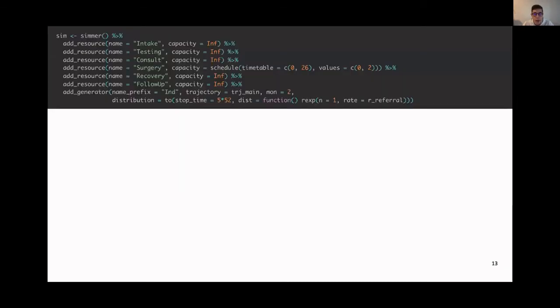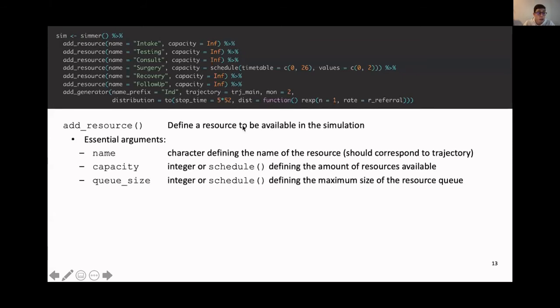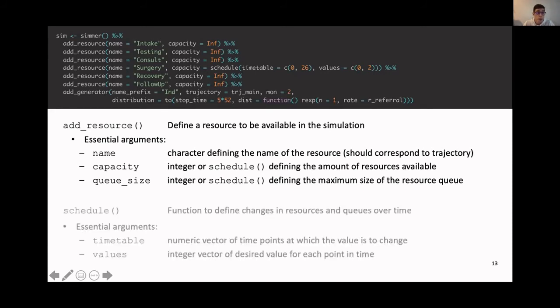We've defined our trajectory. Now it's time to actually run the simulation. We define our Sim, our Simmer environment, our simulation, and we add the resources. For adding the resources, we have to specify the names, and those have to match with the names you use in the trajectory. We have to define the capacity and the queue size. The queue size is infinite by default, but the capacity is 1 by default. In our example, we only have a capacity constraint for the surgery, so all the others are infinite. And for the surgery, we want to define the schedule. Because we had this existing 6-month waiting period, we only open up this resource after 6 months or 26 weeks. So at time 0, we want 0 capacity, and at time 26, we put it to 2, which was our scenario 1.